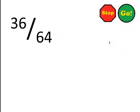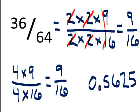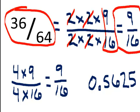Click on the stop sign and give it a whirl. Let's see how you did. We have 36 sixty-fourths. 36 can be factored as 2 times 2 times 9, and 64 can be factored as 2 times 2 times 16. This 2 cancels with that 2, and this 2 cancels with that 2, and that leaves us with 9 sixteenths left over. So 9 sixteenths is equivalent to 36 sixty-fourths.